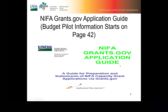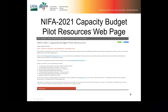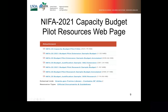The NIFA grants.gov application guide — this is what it looks like on the first page. If you need to go straight to the budget pilot information, that starts on page 42. The capacity budget pilot resources webpage on the NIFA site will have the formula grant forms at USDA.gov email address for any additional information, the grants.gov website, an FAQ, and sample budget, annotated budget, and budget justification for both research and extension programs. When you scroll down, you'll see the actual attachments in PDF format.